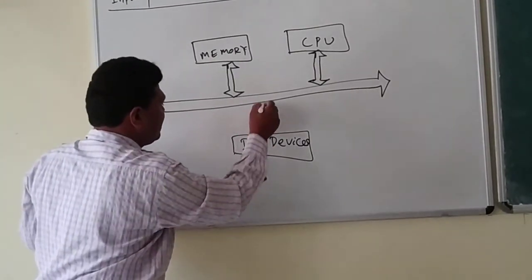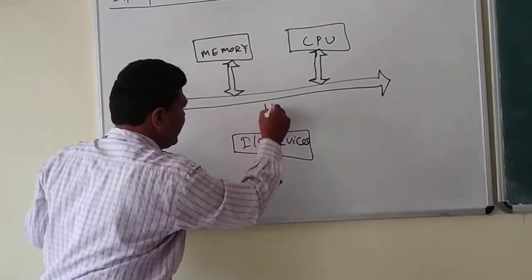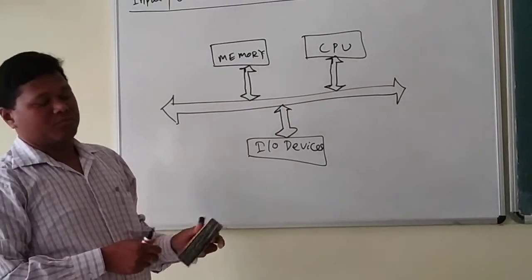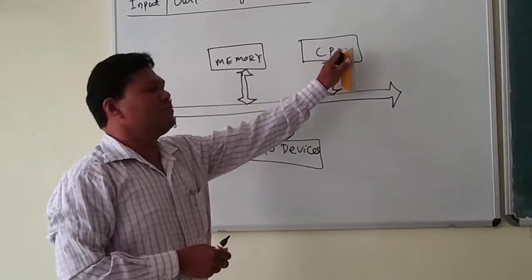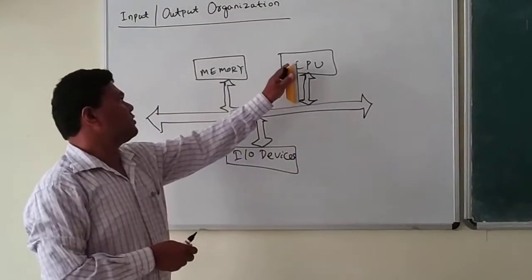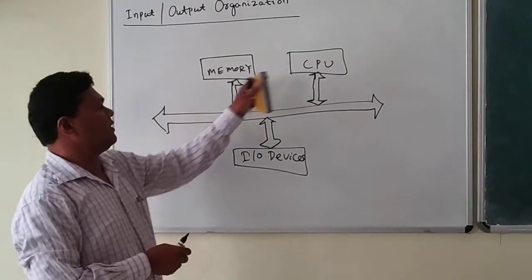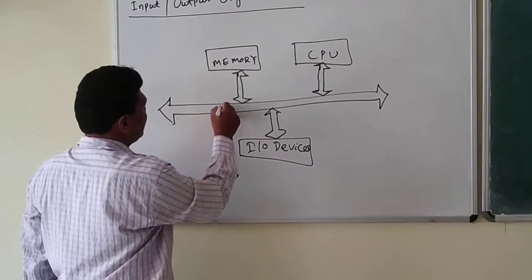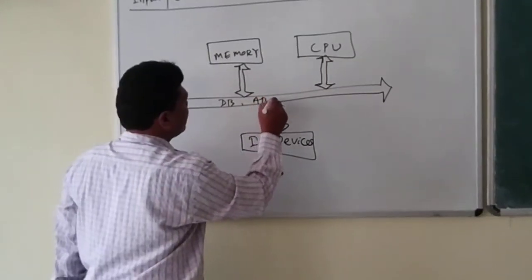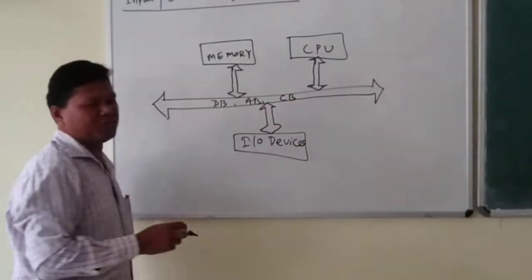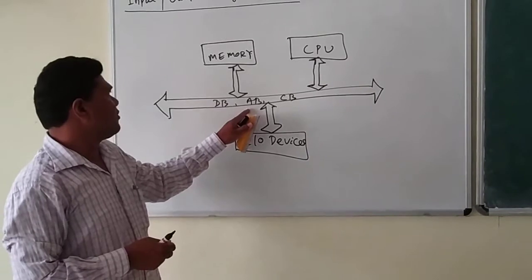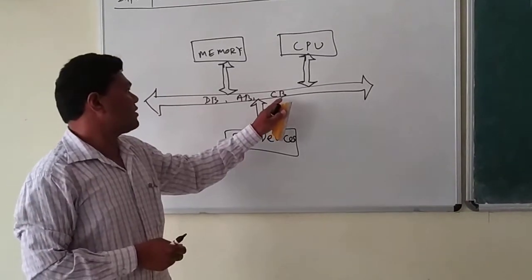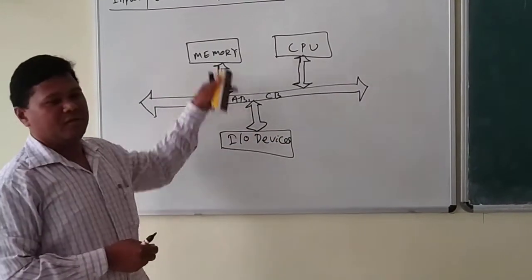Memory receives data from I/O devices through a bus. These I/O devices cannot be directly connected to the CPU since CPU speed is quite higher compared to I/O devices, and CPU speed is also higher compared to memory. So they require one common bus consisting of a data bus, address bus, and control bus — the minimum requirement to address devices and transfer data.